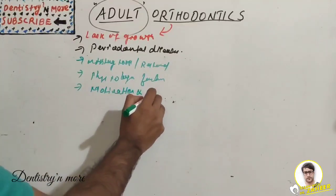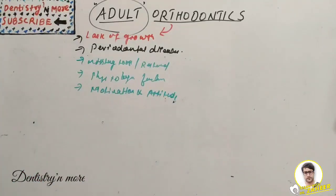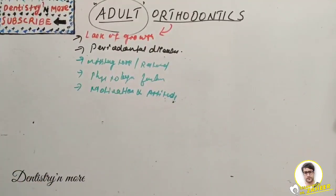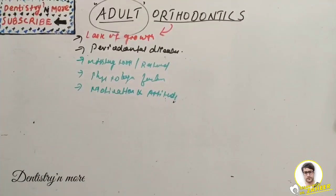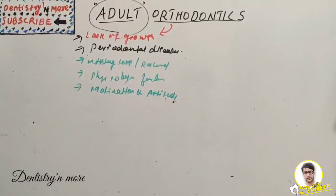Regarding lack of growth: growth changes have occurred by the end of puberty, so there is no scope for growth modification. Overbite correction is very difficult after growth cessation, and extruding the molars is prone to relapse.